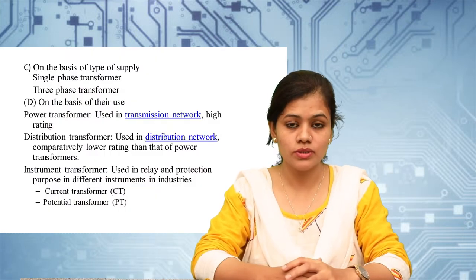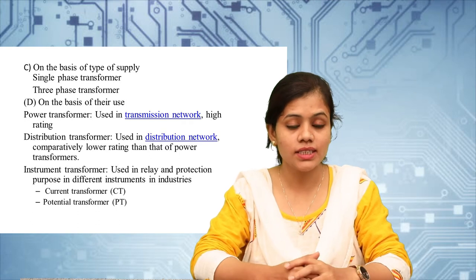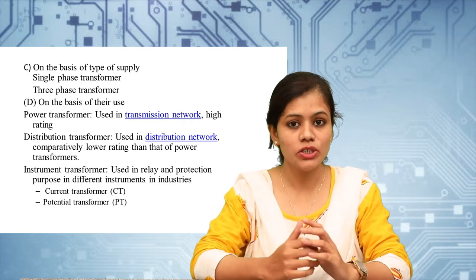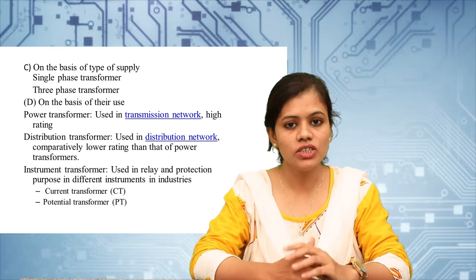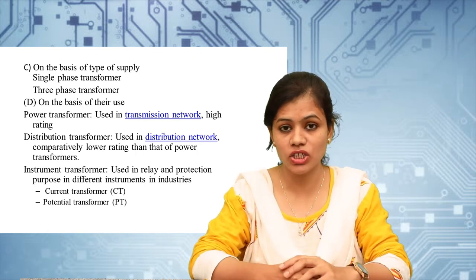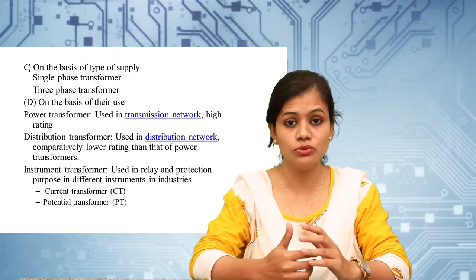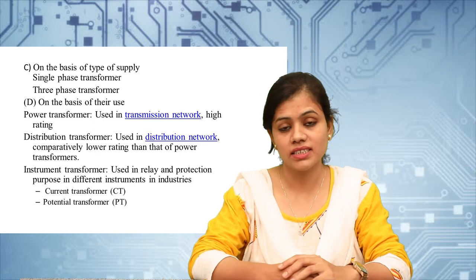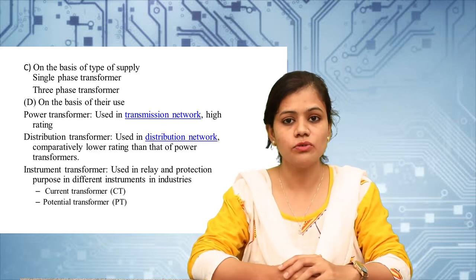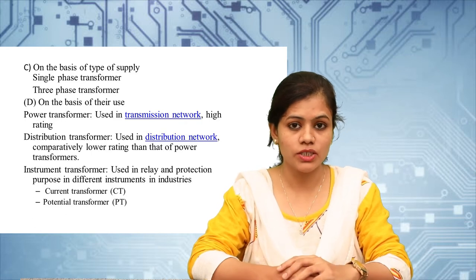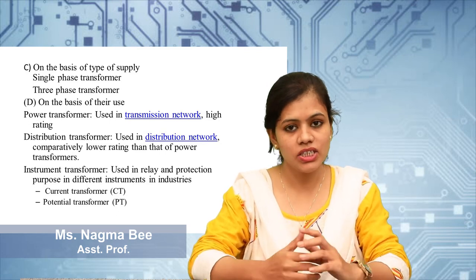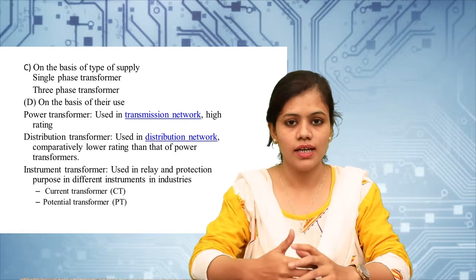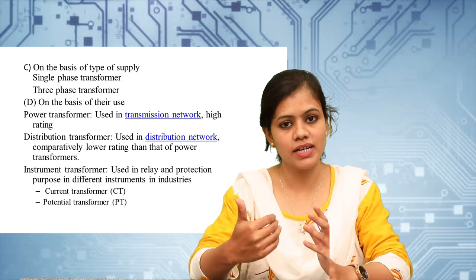According to supply, there are two types: single phase transformer and three phase transformer. According to power system applications, there are two types: power transformer, which is used for high transmission lines and is a very high rating transformer, and distribution transformer, which is used for distribution networks and is of lower rating. For instrumentation, there are current transformer and potential transformer — the current transformer is used for measurement of current in a transmission line and the potential transformer is used for measurement of high voltage in a transmission line.